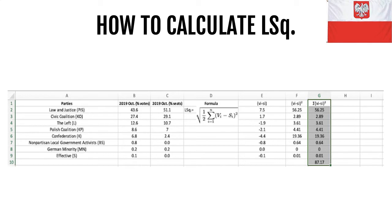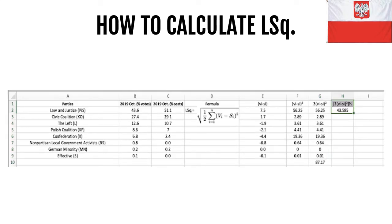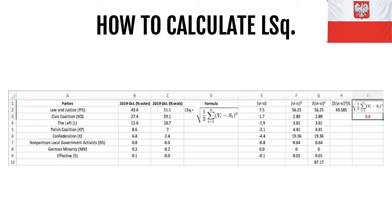The fourth part is to divide 87.17 by 2, so to divide the sum by 2, which gives 43.585. And finally, find the square root of that score, which is 6.6.